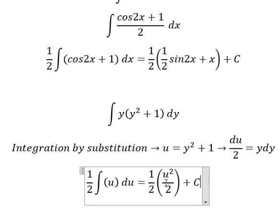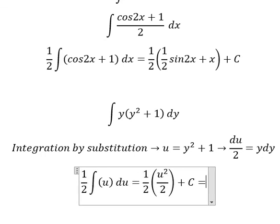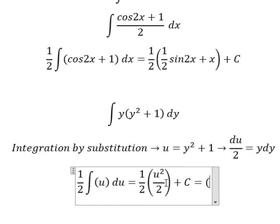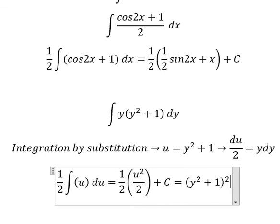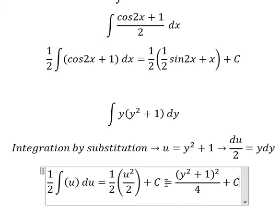And we put c. Now u is y squared plus 1, so we have (y² + 1)² over 4 plus c.